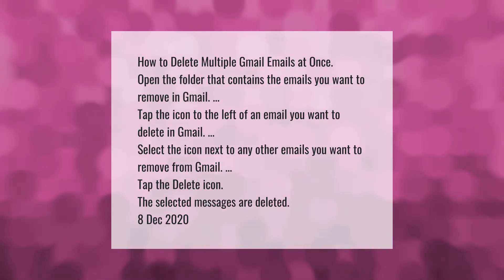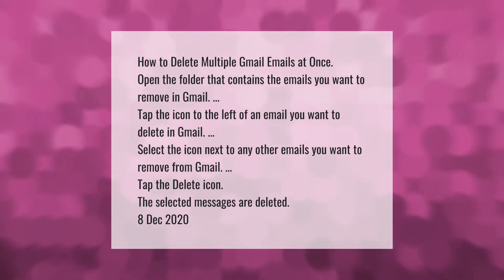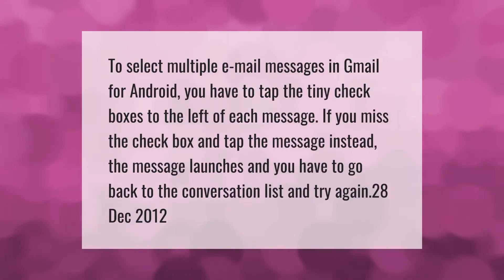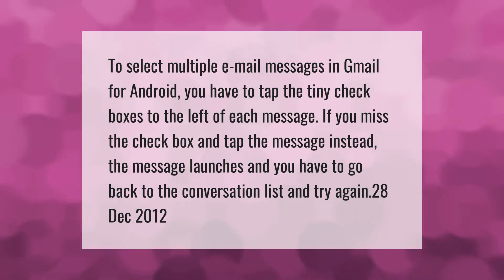To select multiple email messages in Gmail for Android, you have to tap the tiny checkboxes to the left of each message. If you miss the checkbox and tap the message instead, the message launches and you have to go back to the conversation list and try again.